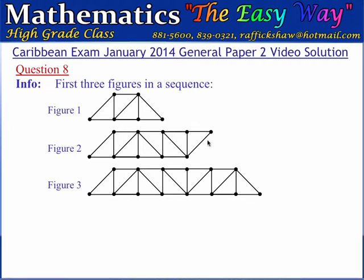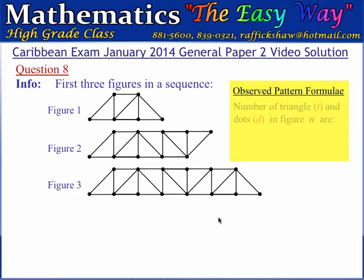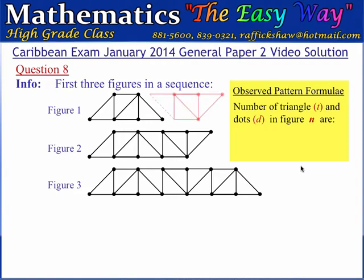The second figure is formed by adding another trapezium with the same dimensions as the first, and the third figure is formed by adding yet another trapezium. What we can do is make some observations to establish a formula for calculating the number of triangles and the number of dots in each figure. We want to establish a formula T for the number of triangles in figure number N and a formula D for the number of dots in figure number N.